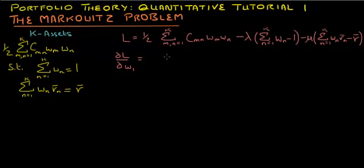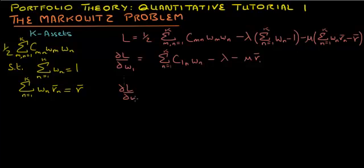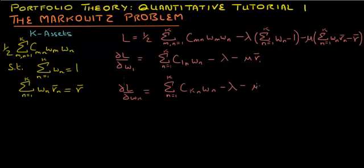The derivative with respect to the first security equals the covariance of the first security with other securities, minus lambda, minus mu times the expected return on the first security. Similarly, taking the derivative with respect to the Kth security in the portfolio, we get the covariance of the Kth security with all other securities in the portfolio, minus lambda, minus mu times the expected return on the Kth security.